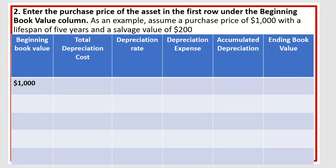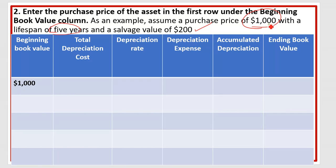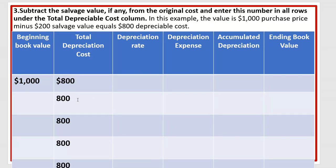First, find the value of your asset. Suppose the value of our machinery is $1,000 — this is the beginning book value. The salvage value is $200, meaning at the end of 5 years we will get $200 when we sell it. So $1,000 minus $200 equals $800, which is the total depreciation cost — you write 800 every year.